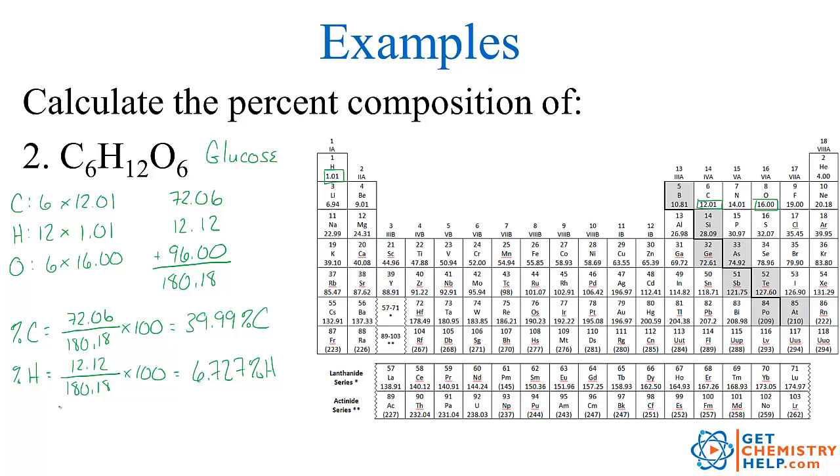And how about the percentage of oxygen? The total mass of all 6 oxygens was 96.00, so 96.00 divided by the total of the compound was 180.18, and again, times 100, so 53.28% oxygen. So there you have it. This is the percent composition for glucose, broken down by percent carbon, percent hydrogen, and percent oxygen.